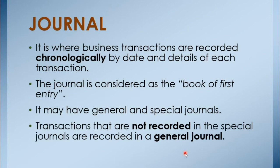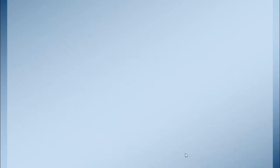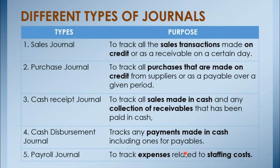Transactions not recorded in the special journals are recorded in the general journal. Special journals are used to record recurring transactions — those that happen frequently. These include the sales journal, which is used to track all sales transactions made on credit or as a receivable — recording all transactions related to credit sales.